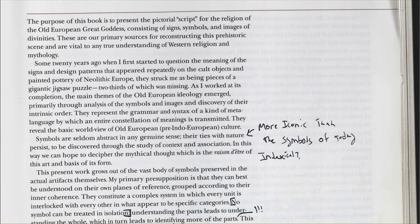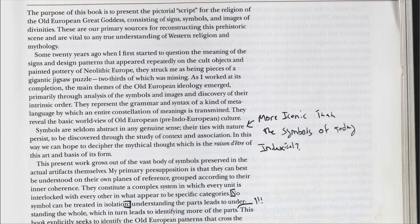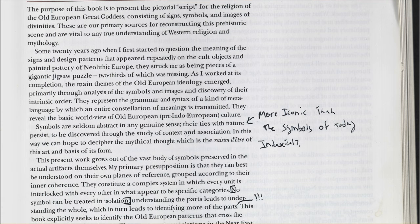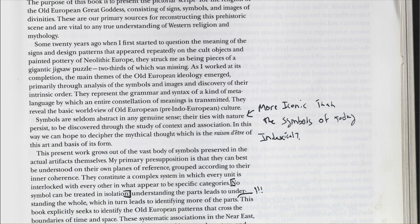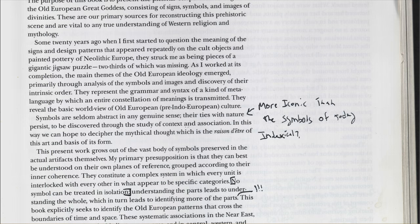Some twenty years ago, when I first started to question the meaning of the signs and design patterns that appeared repeatedly on the cult objects and painted pottery of Neolithic Europe, they struck me as being pieces of a gigantic jigsaw puzzle, two-thirds of which was missing. As I worked at its completion, the main themes of the old European ideology emerged, primarily through analysis of the symbols and images and discovery of their intrinsic order. They represent the grammar and syntax of a kind of meta-language by which an entire constellation of meanings is transmitted, revealing the basic worldview of old European, pre-Indo-European culture.